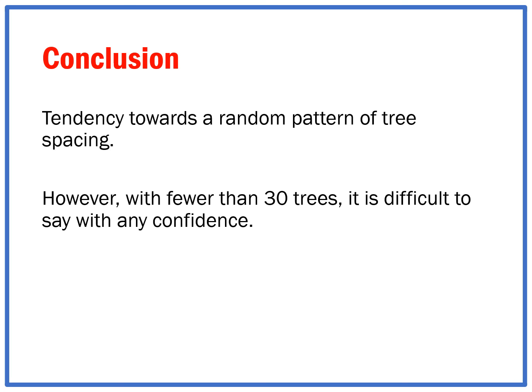So in your results, you would have to say, although there shows a tendency towards a random pattern of tree spacing, with fewer than 30 trees, which is the minimum required for the nearest neighbor analysis, we can't say with any confidence if that did actually happen.